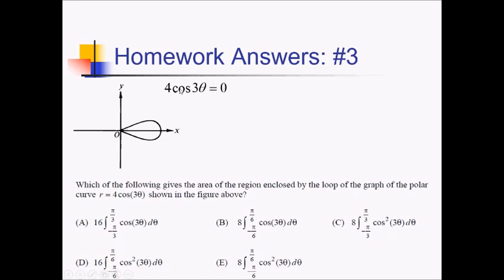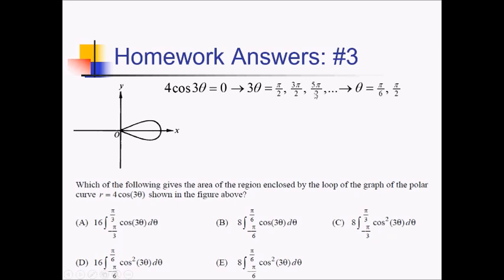This is really cosine of 3 theta equals 0 if I divide by 4. Taking the inverse cosine — where on the unit circle is cosine equal to 0? That's on the y-axis. So 3 theta equals pi over 2, 3 pi over 2, 5 pi over 2, and so on. Dividing by 3 to get theta by itself, this is now pi over 6, then pi over 2, then 5 pi over 6. So that gives us all these angles.